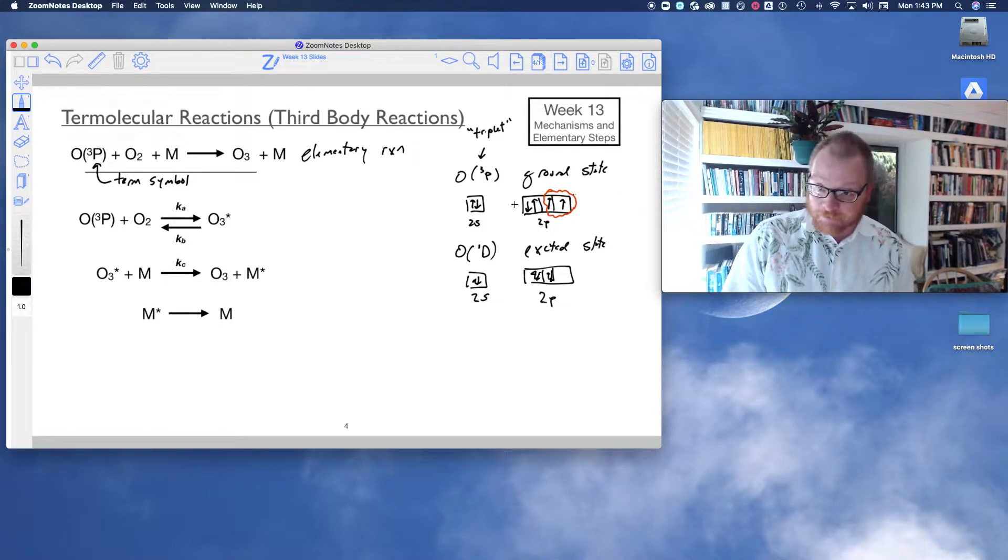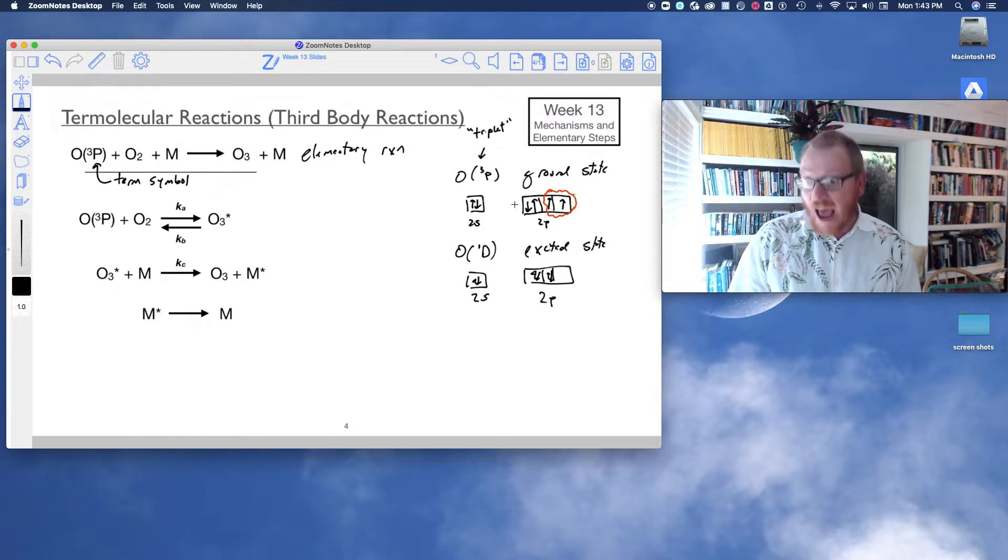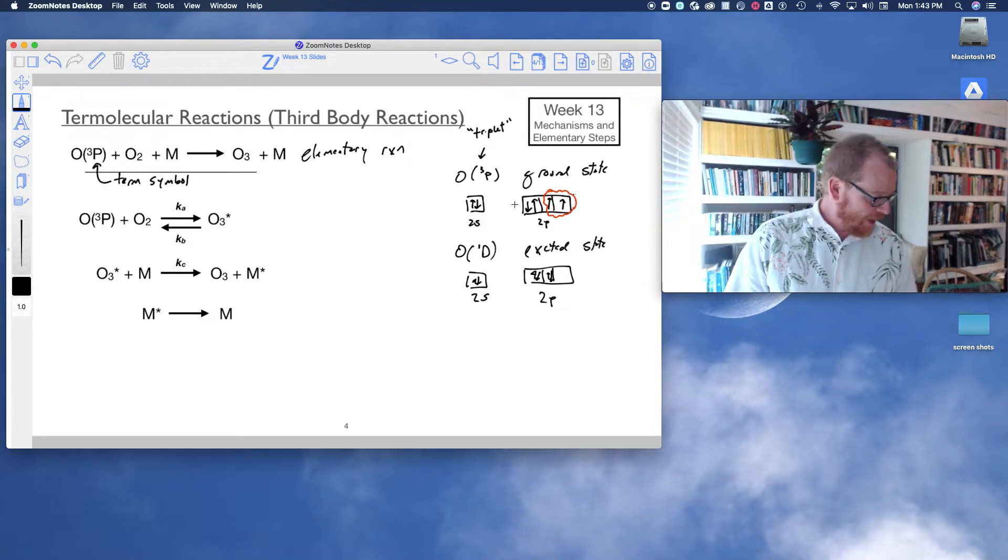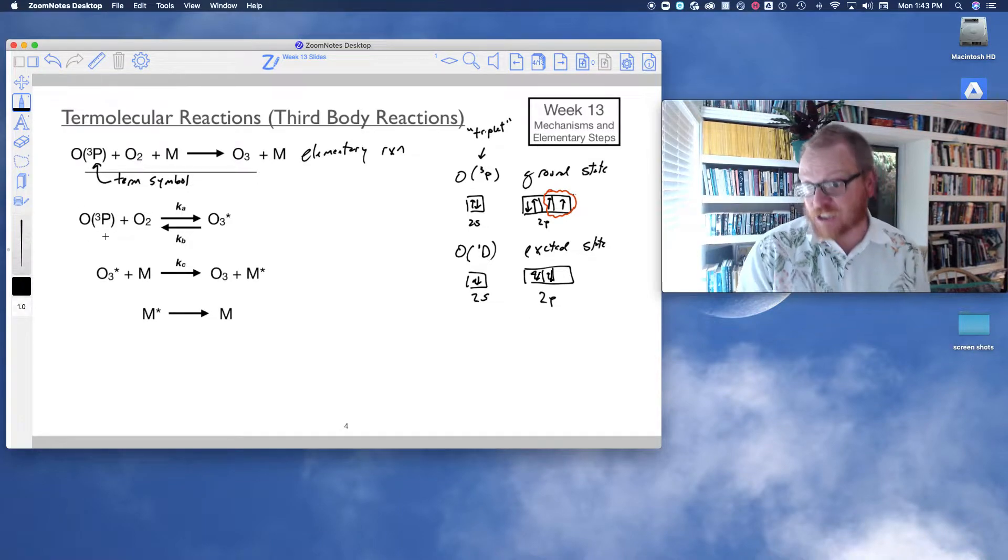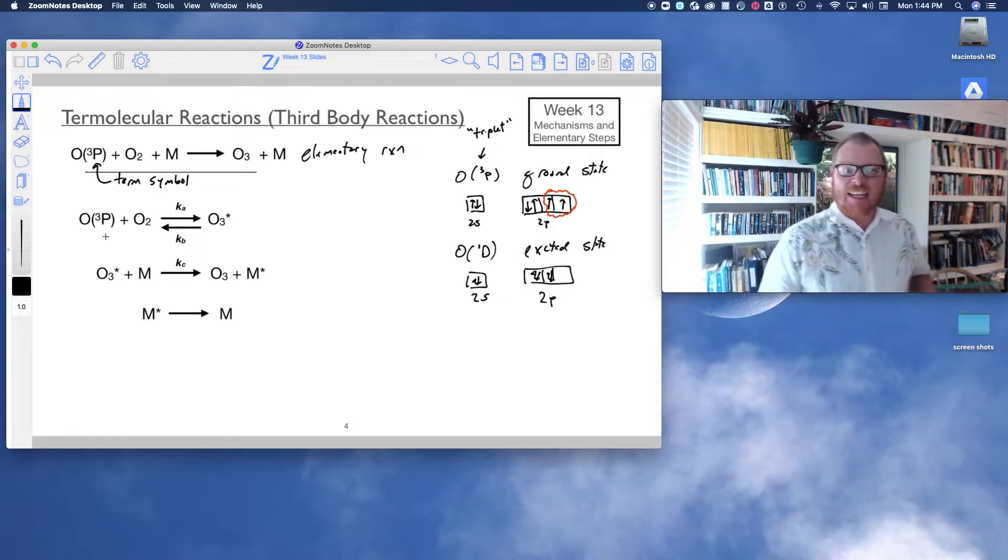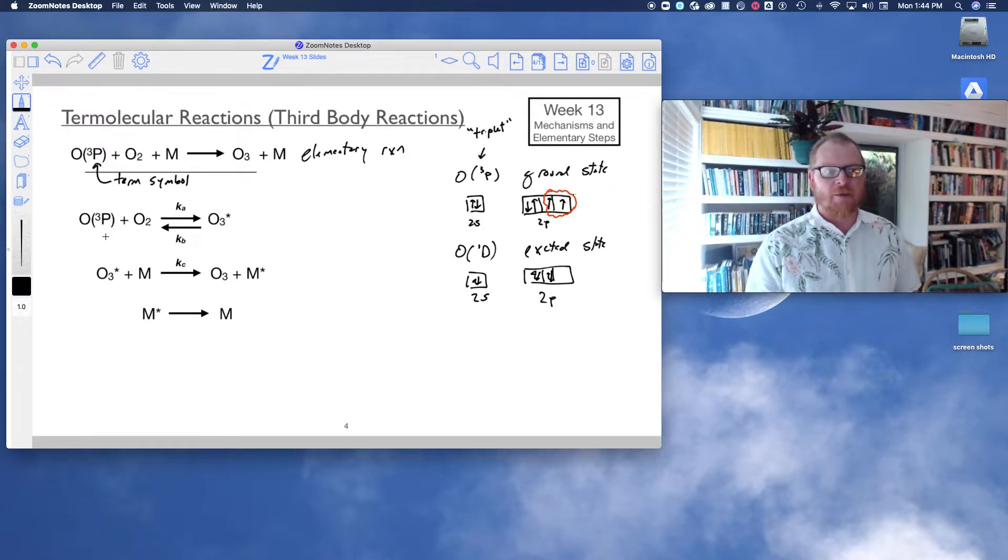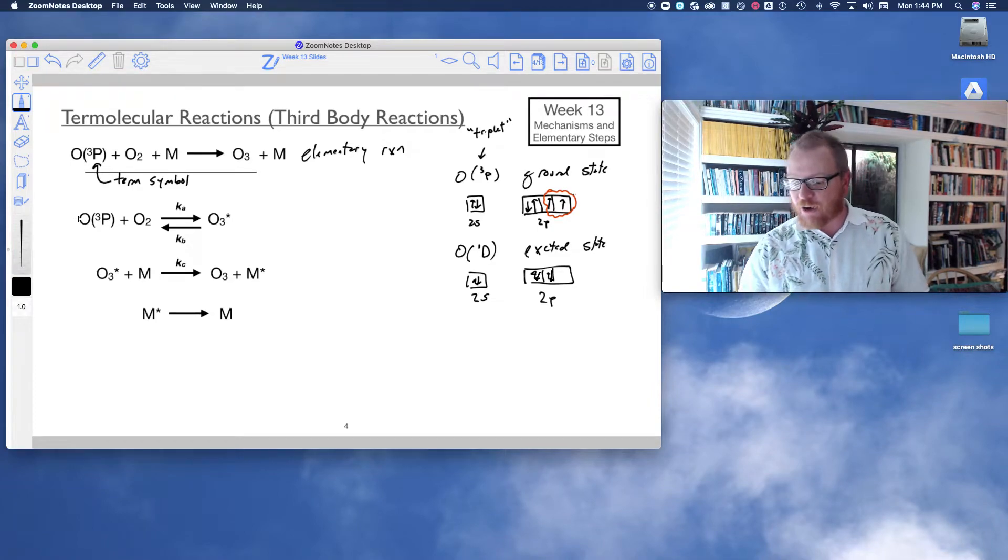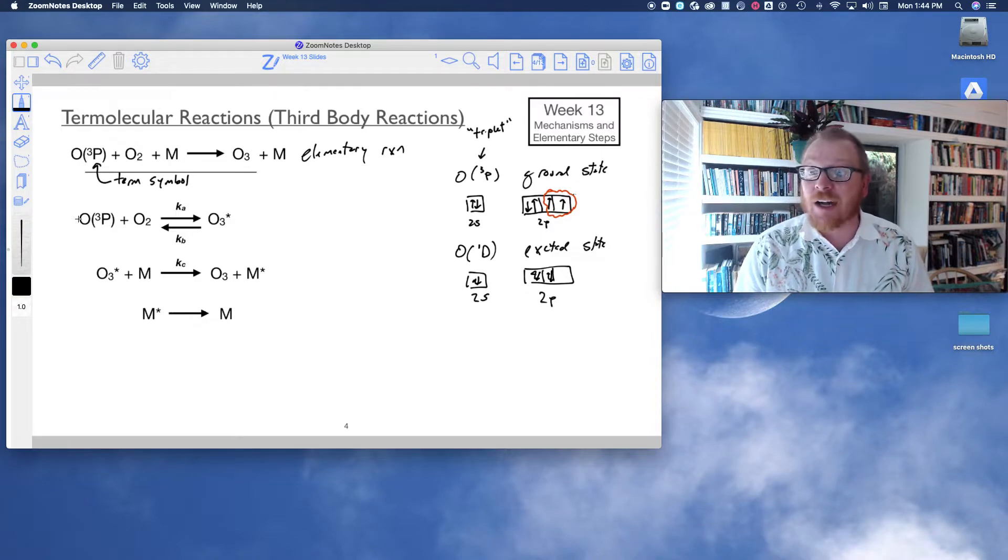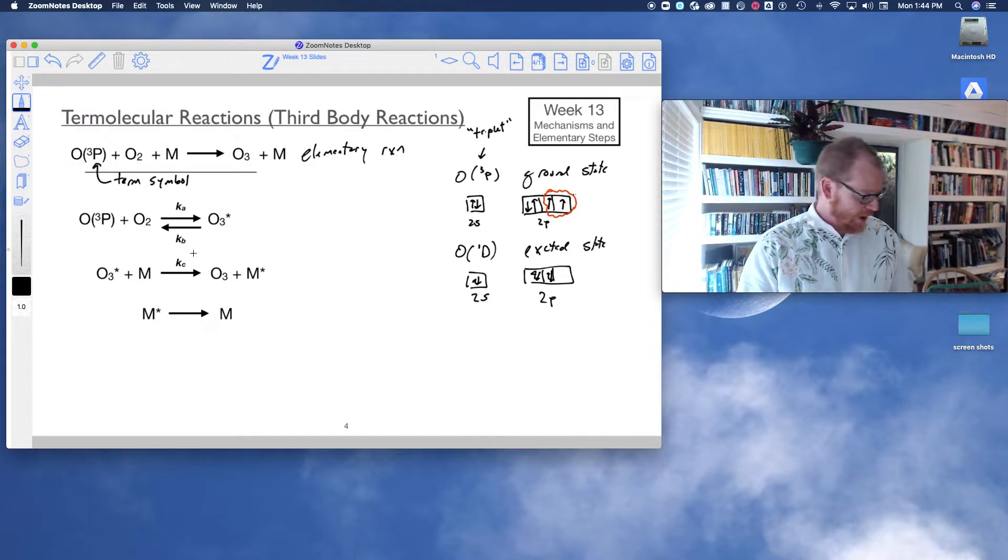What this means is oxygen is a diradical. Why is that important? When we look at this reaction of an oxygen atom with an O2 to form an O3, it seems like that should be a slam dunk in the chemistry. A singly unpaired oxygen atom is very unstable. It wants to bond with something. So it seems reasonable that this should not be a complicated mechanism. But as it turns out, it is.